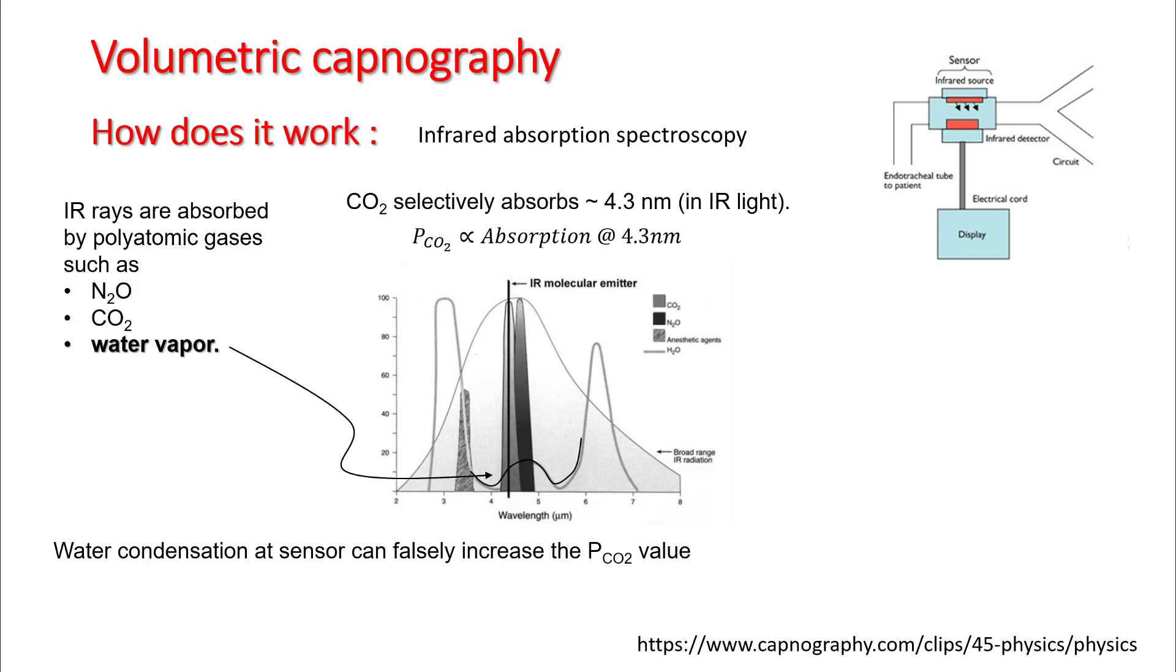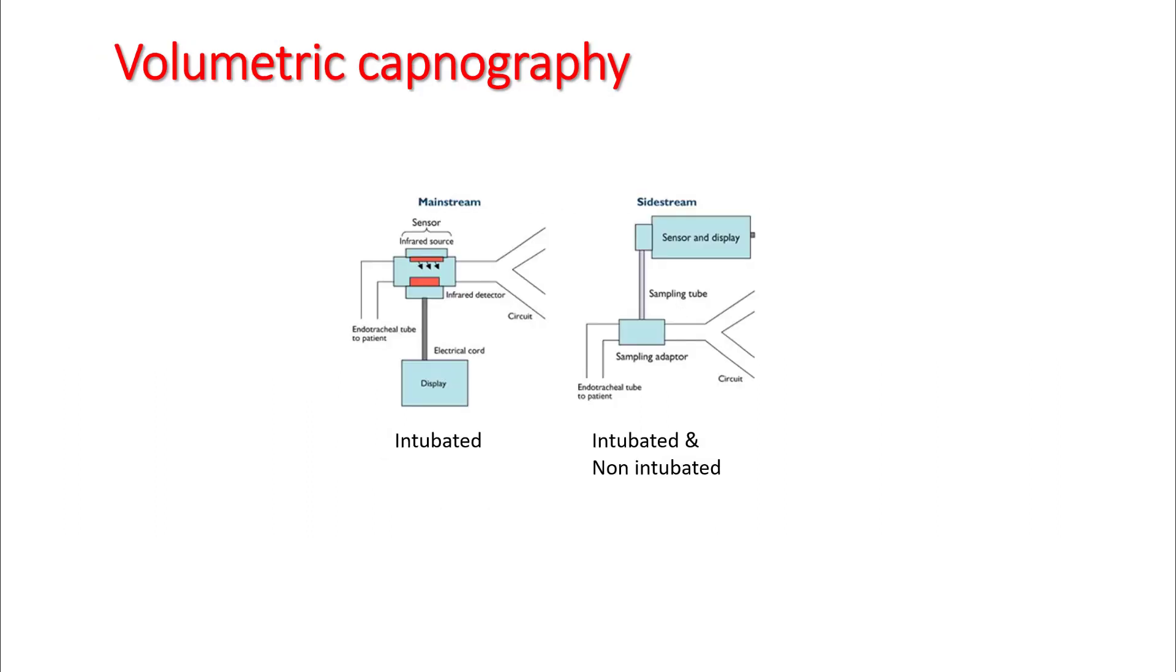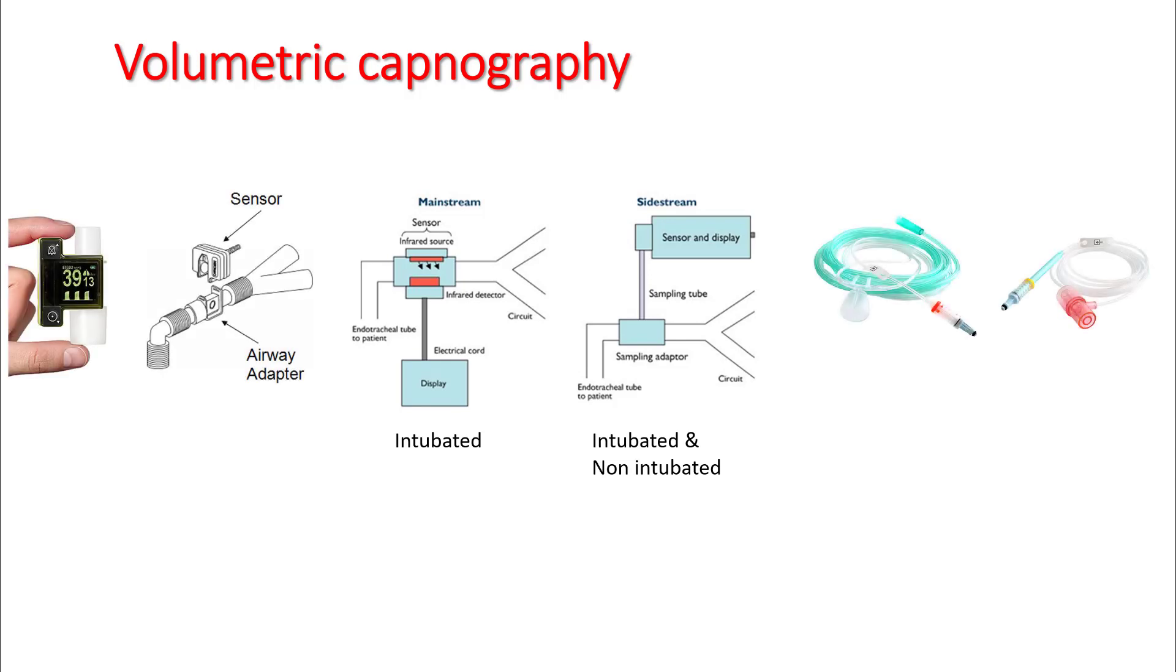There are two types of volumetric capnography: one is mainstream capnography and the other is sidestream. The only difference between them is where the sensor is placed. Mainstream is used mostly in intubated patients, while sidestream is used in both intubated and non-intubated patients.